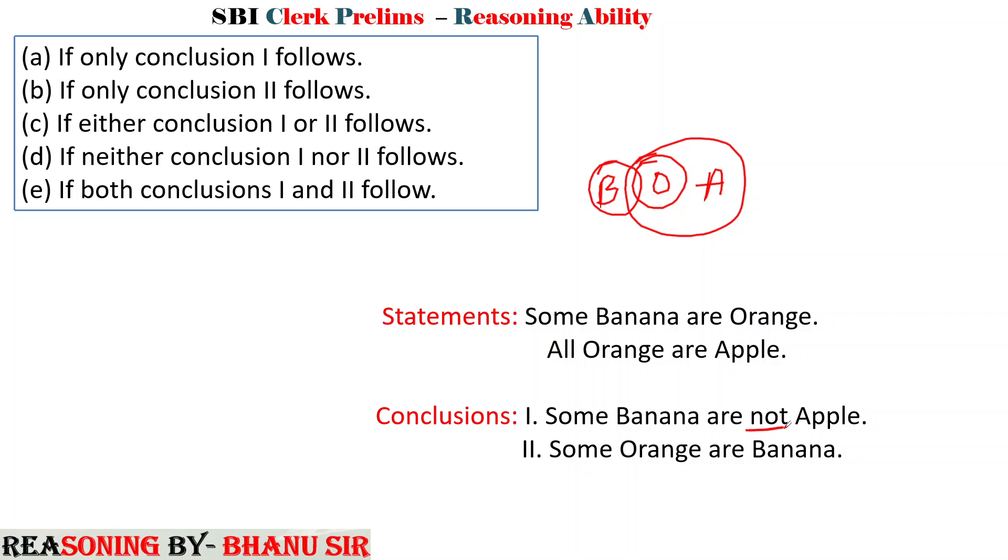First one is false because the statement is in negative here. Pulse means can't see, and can't see conditions in false. Some orange are banana. So if some banana is orange, then some orange will be banana. Second one is true. That's why your answer is: if only conclusion second is true.